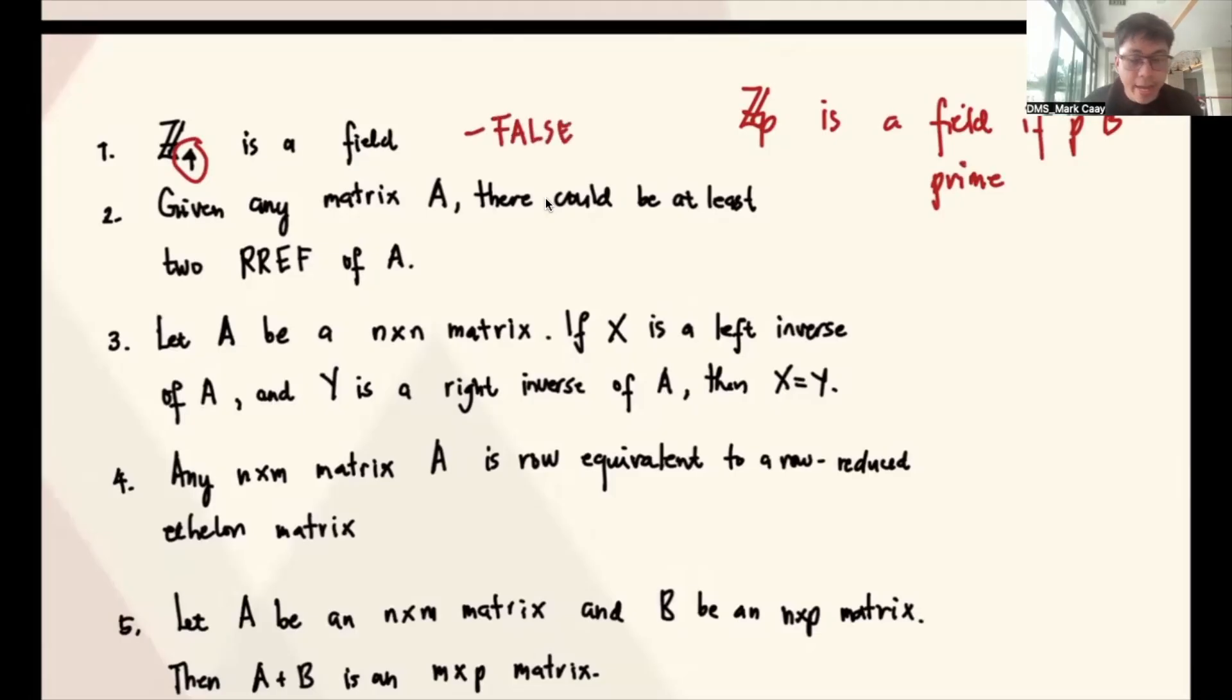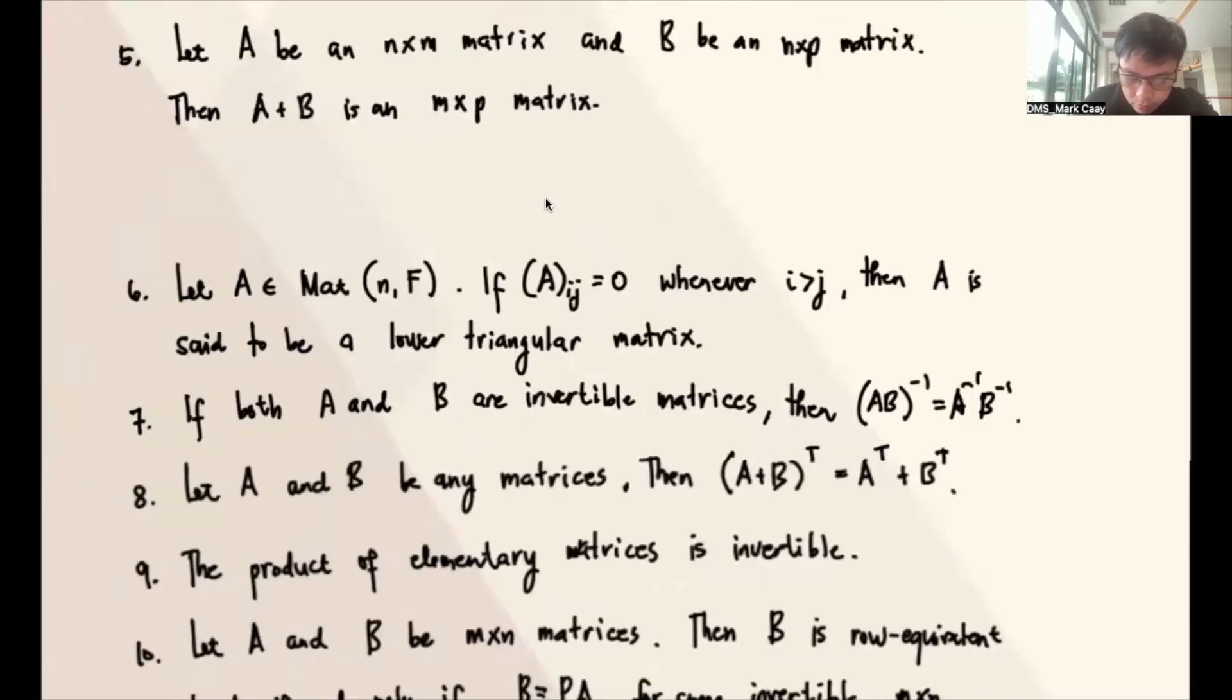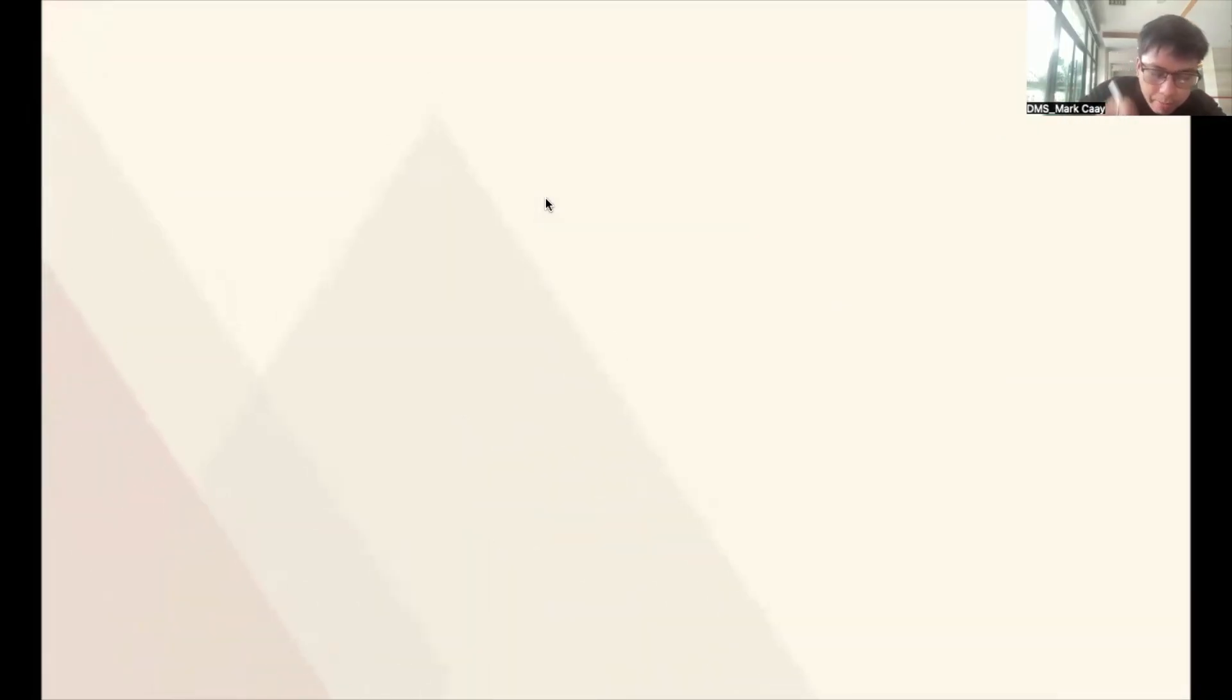In fact, we can have another illustration why this Z4 is not a field. Let's see. Z4 contains 0, 1, 2, 3. Now, let's double-check this one.